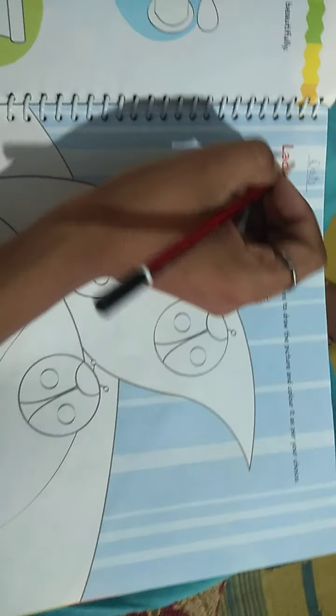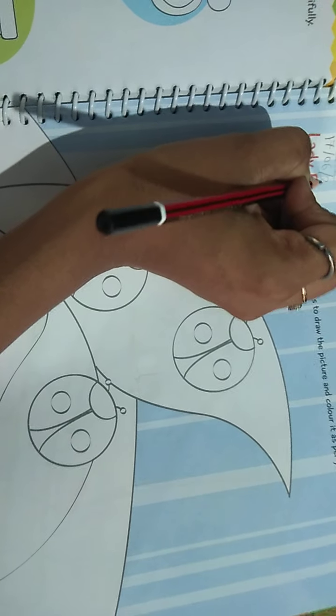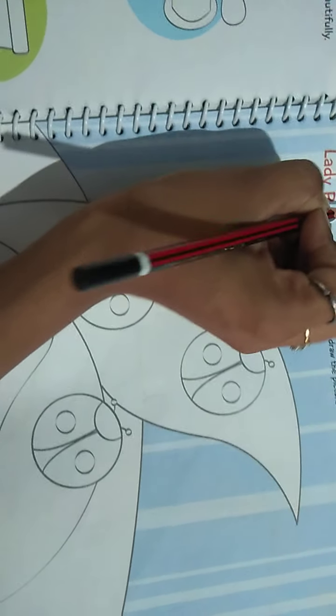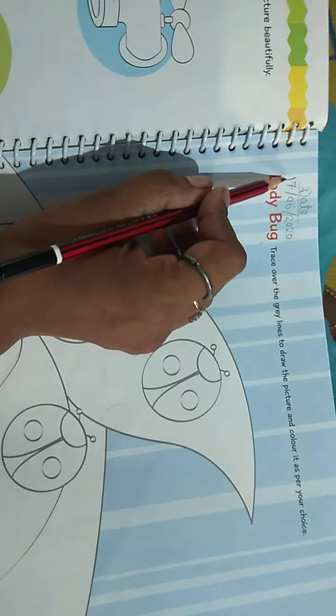Yesterday was 16 and today is which date? Today is 17. That is 17-06-2020.